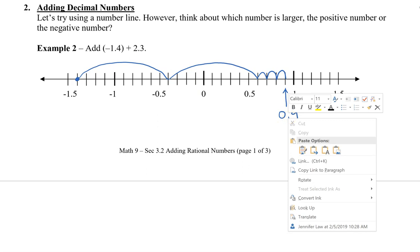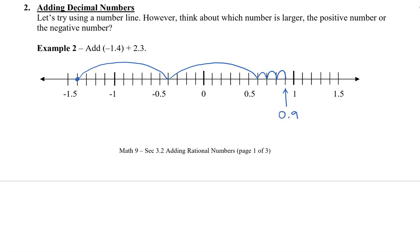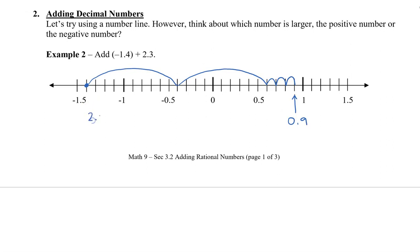Now, obviously, we don't want to use a number line every single time. So we're going to take the bigger number and subtract the smaller number: 2.3 minus 1.4. When I subtract, I get nine, bring down my decimal, and then one minus one is zero, so we have 0.9. Then we have to think about which is the larger number — we have negative 1.4 and positive 2.3, so we have more positives. Therefore, my answer is going to be positive 0.9.